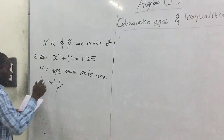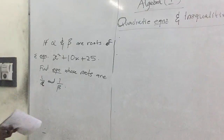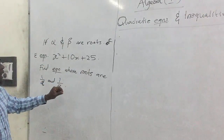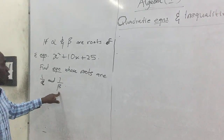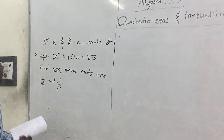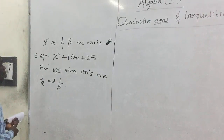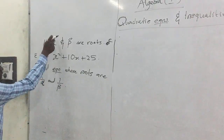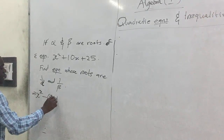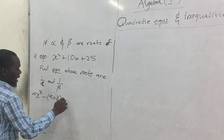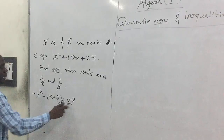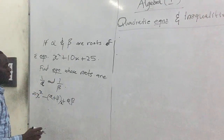Alpha and beta are roots of some equation we don't know and we have to find that equation. We first have to do some comparisons. From our earlier video, we need an equation of the form x squared minus (alpha plus beta)x plus the product of the roots, to compare sum and product of roots.